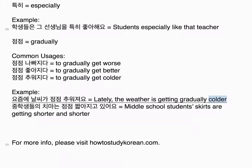점점 equals gradually. Common usages: 점점 나빠지다 — to gradually get worse; 점점 좋아지다 — to gradually get better; 점점 추워지다 — to gradually get colder. Examples: 요즘에 날씨가 점점 추워져요 — lately the weather is getting gradually colder. 중학생들의 치마는 점점 짧아지고 있어요 — middle school students' skirts are getting shorter and shorter.